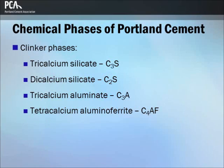The four primary phases in clinker are tricalcium silicate (C3S), which is three calcium oxides and one silica; dicalcium silicate (C2S); tricalcium aluminate (C3A); and tetracalcium aluminoferrite (C4AF). Remember that these are shorthand notations.